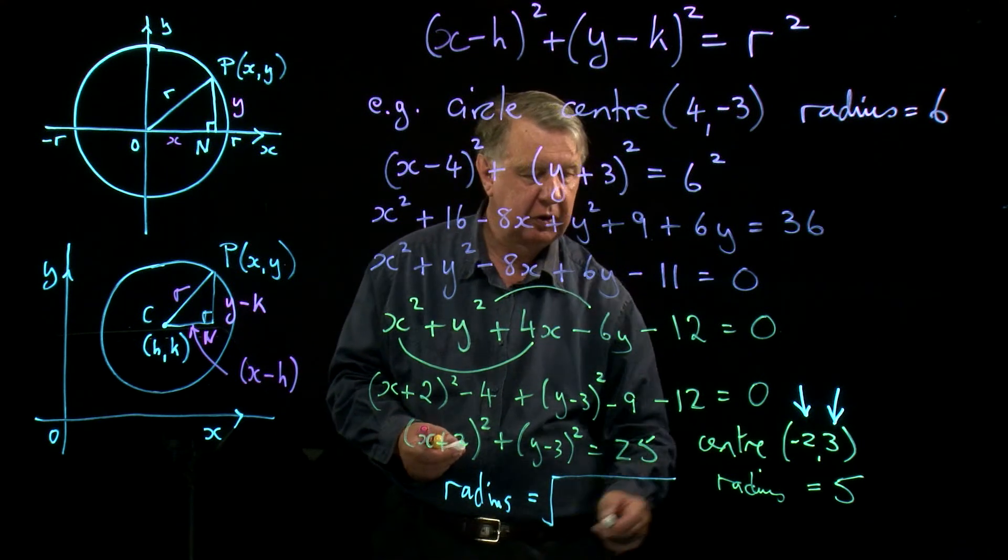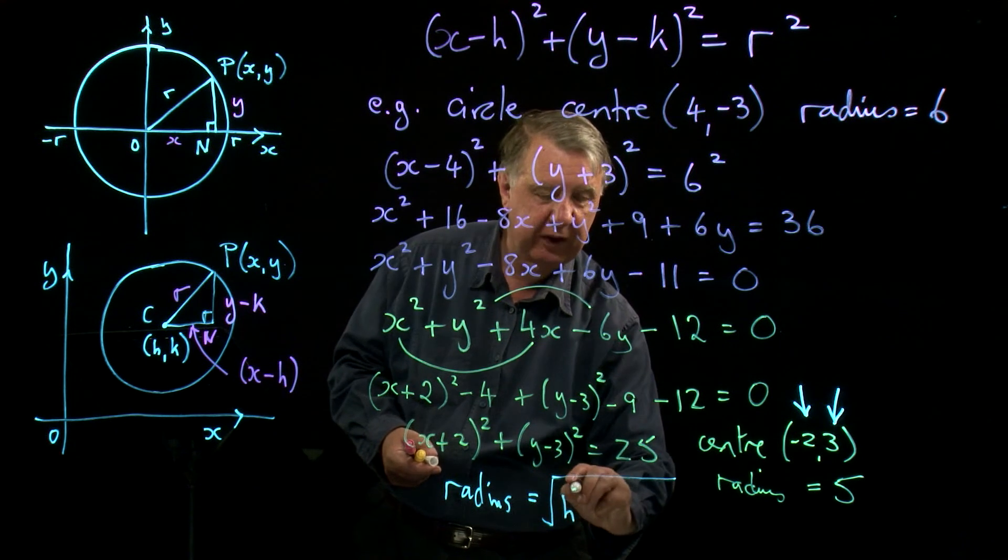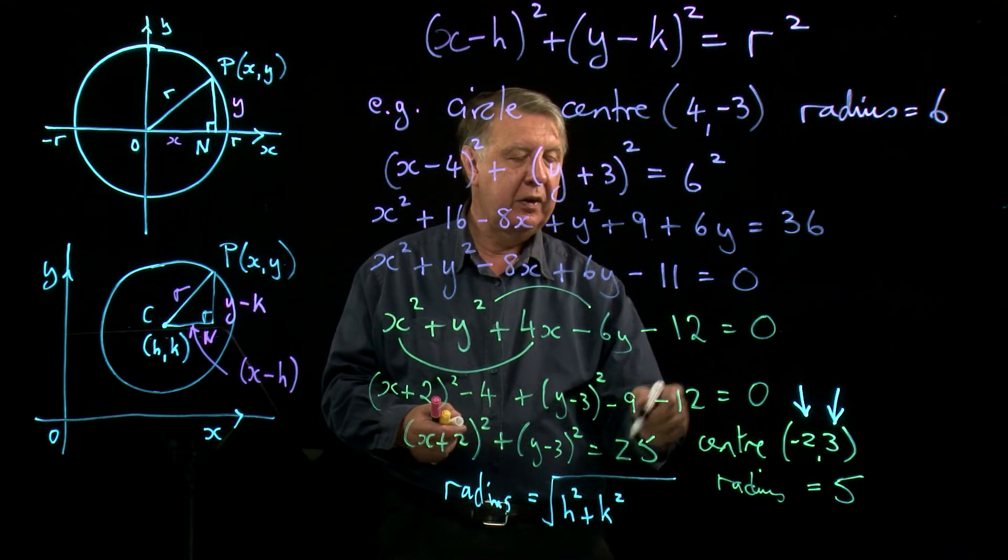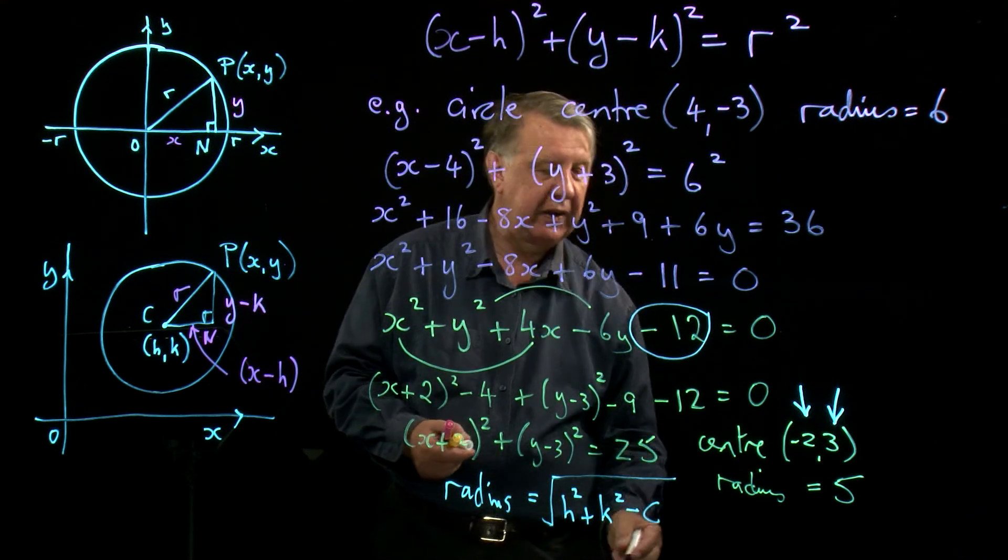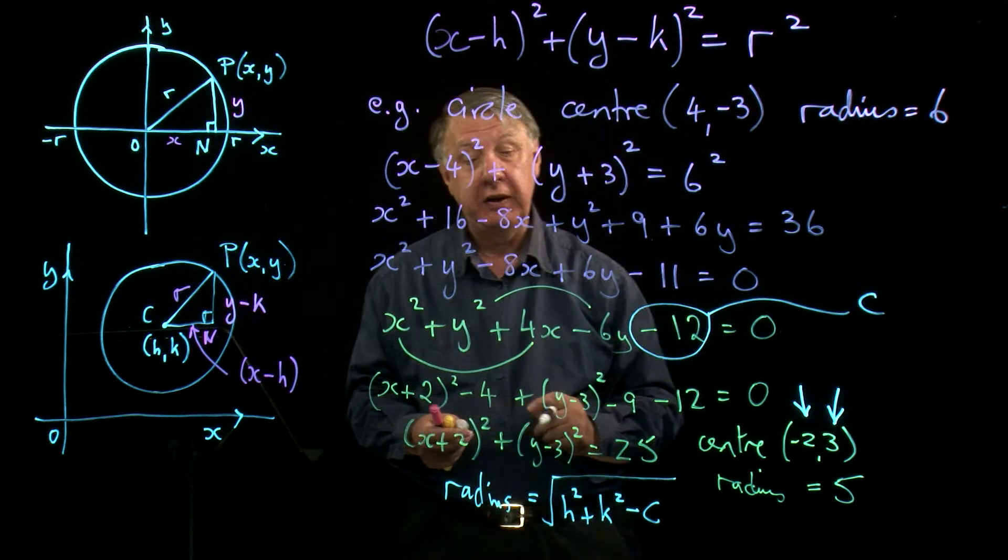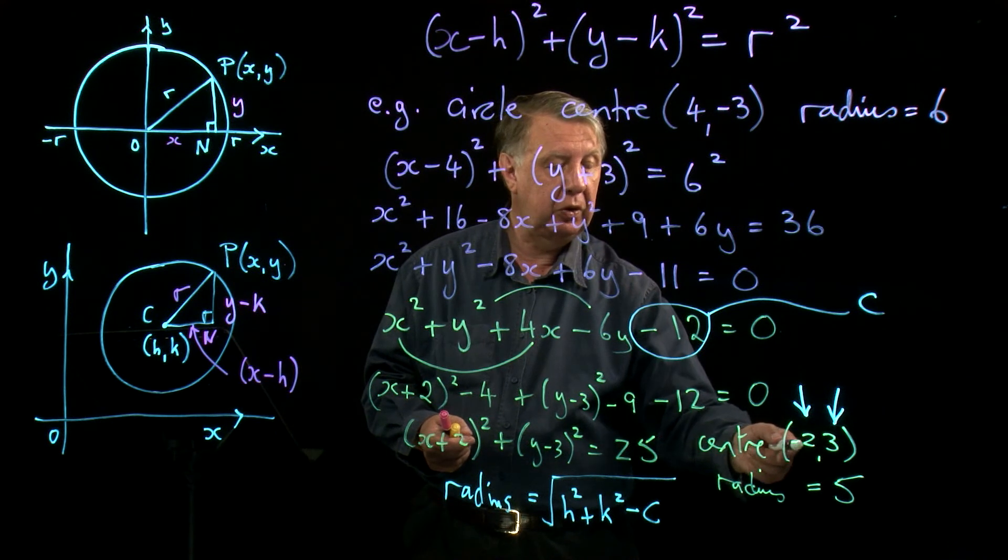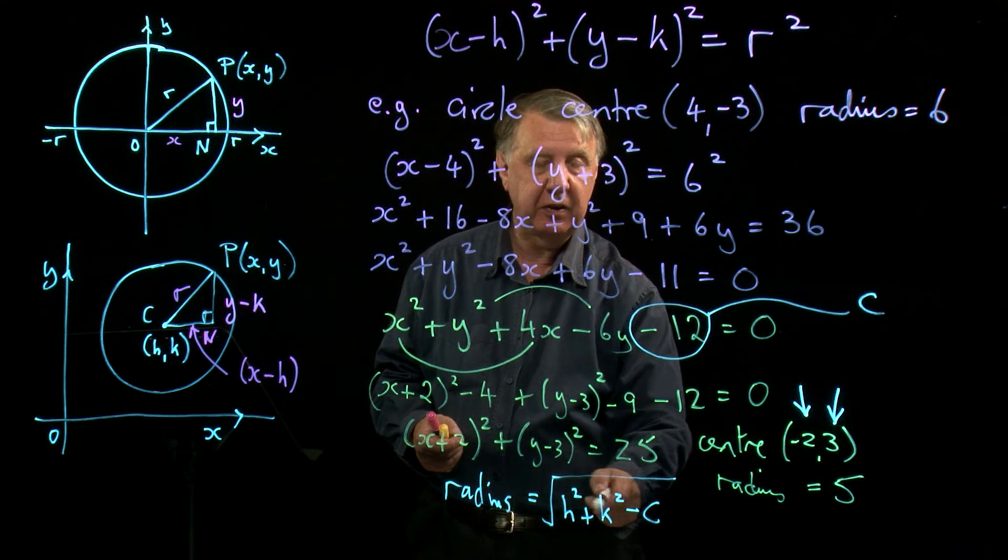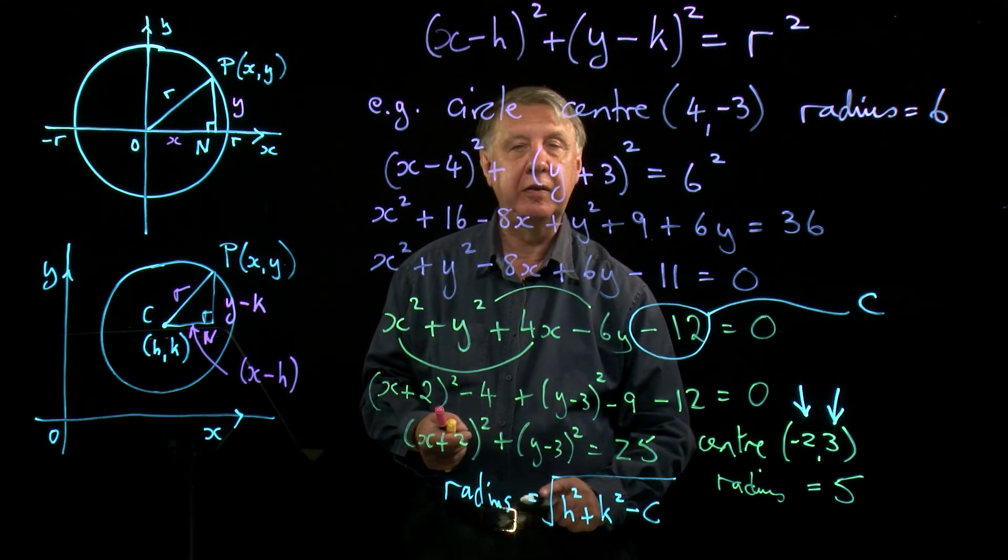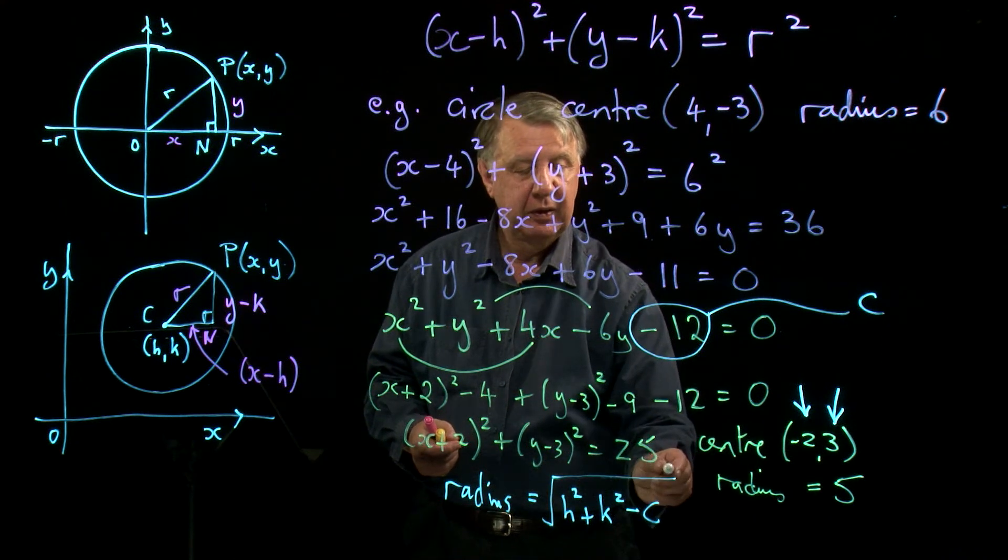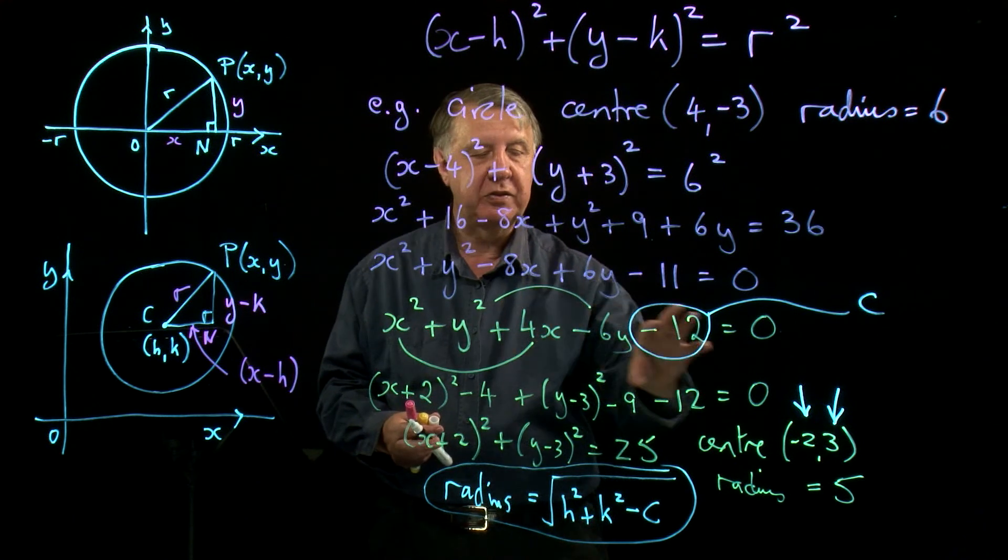The radius will be the square root of square this number, square that number, so that's H squared and K squared, and then you take away that. And if I call that C, which it usually is denoted by C, in this case I'd be taking away negative 12 so I'd be adding 12. So I'd square that which is 4, square that which is 9, add those together gives me 13, take away negative 12 is plus 12, 25. Square root of 25 would be the radius. Useful but a little harder to remember, so perhaps it's safer to stick with this process here.